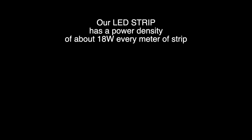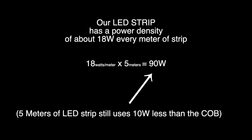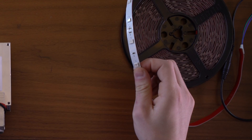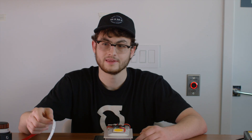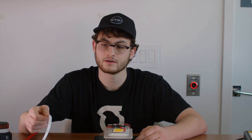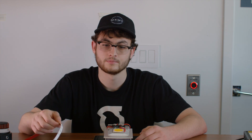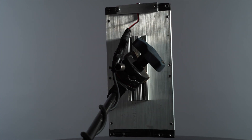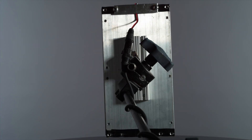LED strips, on the other hand, like the ones we use for our panels, have a power density of about 18 watts per meter. So basically you need five meters of LED strip just to use the same amount of power as this chip. These LEDs are such low power density that their surface area and contact with air alone is enough to keep them cooled. Furthermore, on the back of our LED panels we have an aluminum panel that acts as a heatsink and gives even more contact with air, keeping our panels cool to the touch when operating.